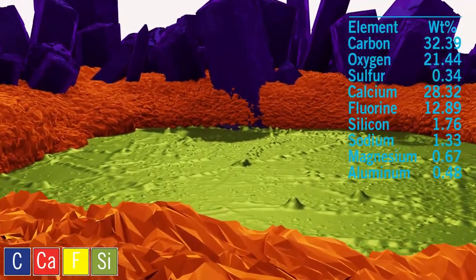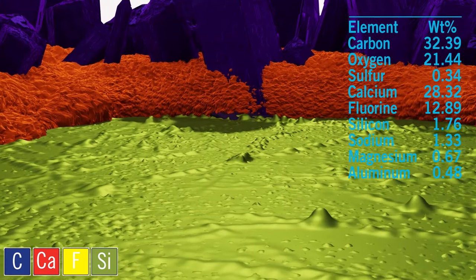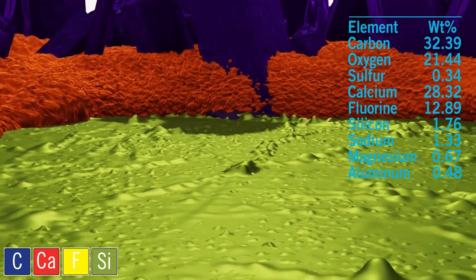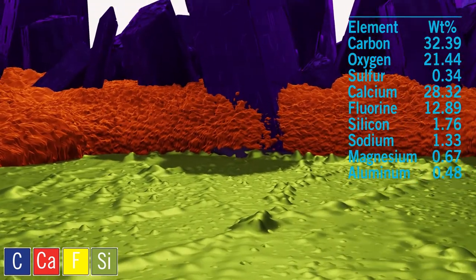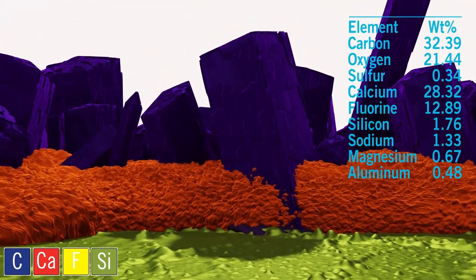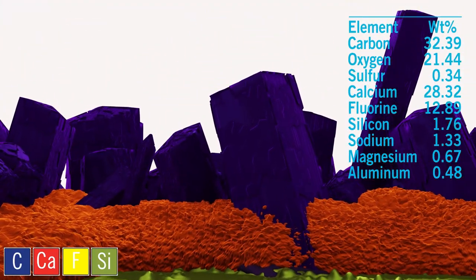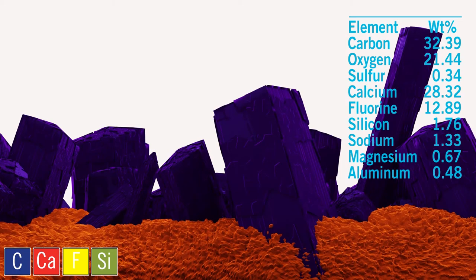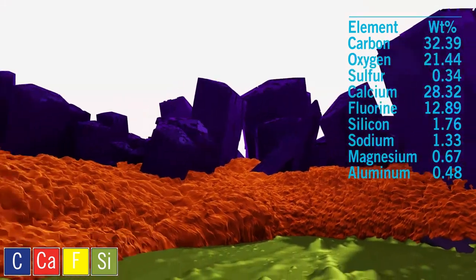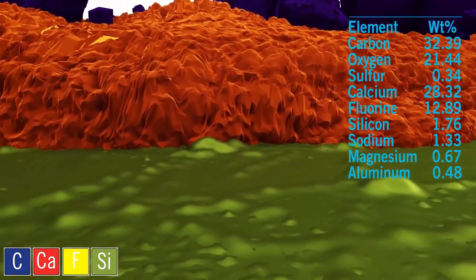If we relied on EDS alone, we may have discounted silica, as it was present in much lower relative concentrations when compared to both calcium and fluorine. Additionally, colloidal silica has a granular texture, which may have led us to believe that it was part of the granular foulant layer.